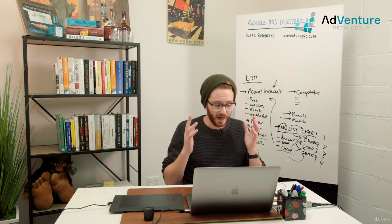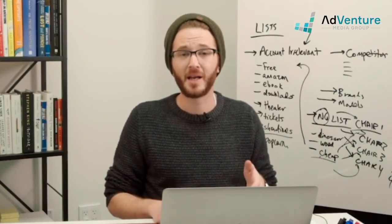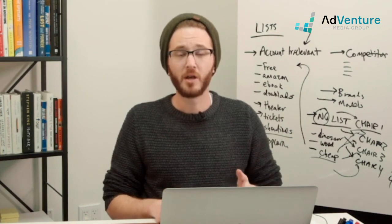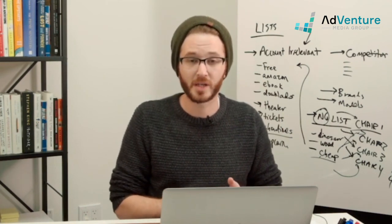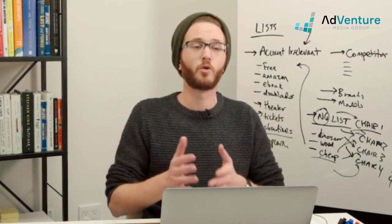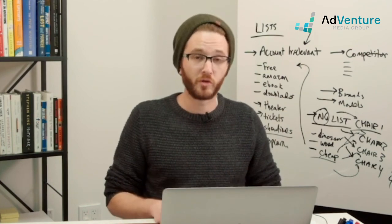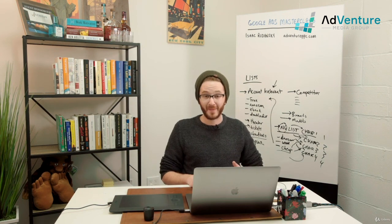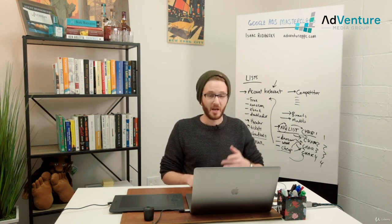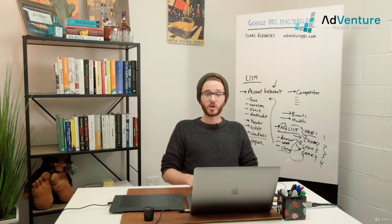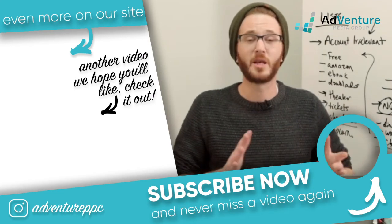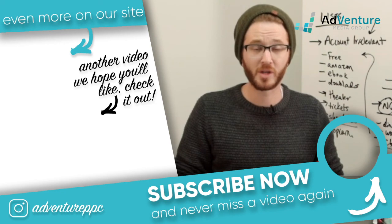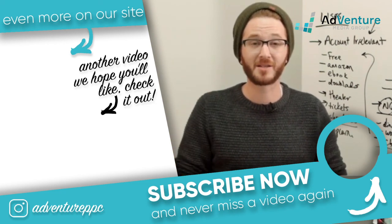As an exercise, if you haven't done this already, create an account irrelevant negative keyword list. Use research tools like Google Suggestions, related searches, your search terms report, and tools like Ubersuggest, and start adding account irrelevant negative keywords with the right match types to your lists. I'll see you in the next lecture where we'll move on to keyword research for positive keywords and different techniques we can use.